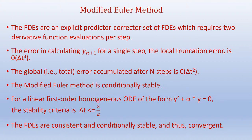The modified Euler method is conditionally stable. For a linear first-order homogeneous ODE of the form y' + αy = 0, the stability criteria is Δt ≤ 2/α. This is the same stability condition as for the explicit Euler method. The finite difference equations are consistent, and when unconditionally stable conditions are met, the method is convergent.